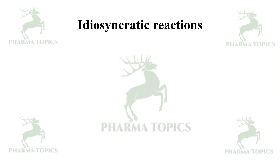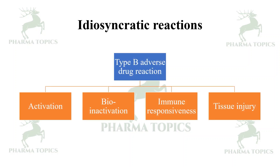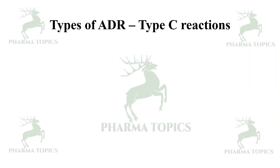Idiosyncratic Type B reactions may be due to activation of the drug, bioinactivation of the drug, immune responsiveness, or tissue injury. Next is Type C reactions. Type C refers to chronic reactions.